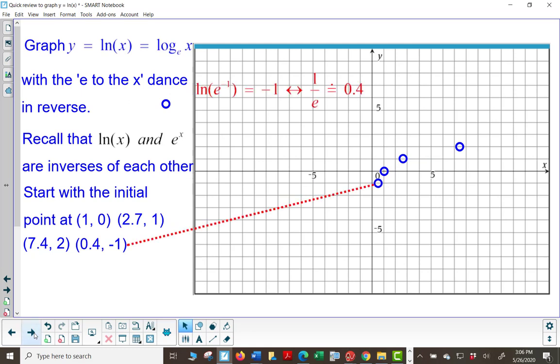0.4, the natural log of e to the negative 1 is negative 1. The reciprocal of e is about 0.4. And the reciprocal of e squared is about 0.14.